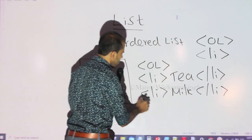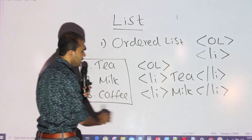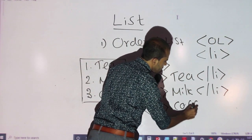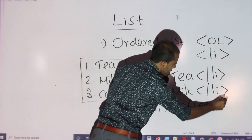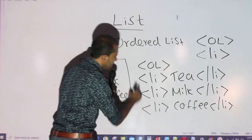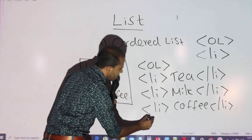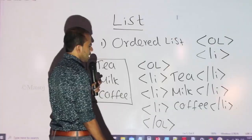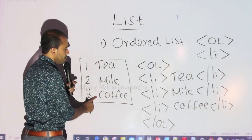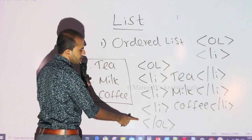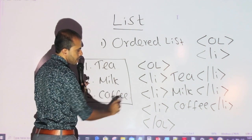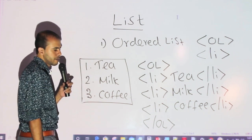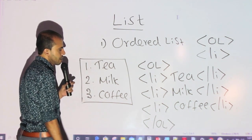If you want to close the item, you can close the item. Then you can close the item. You can also click the list. You can click the HTML code.